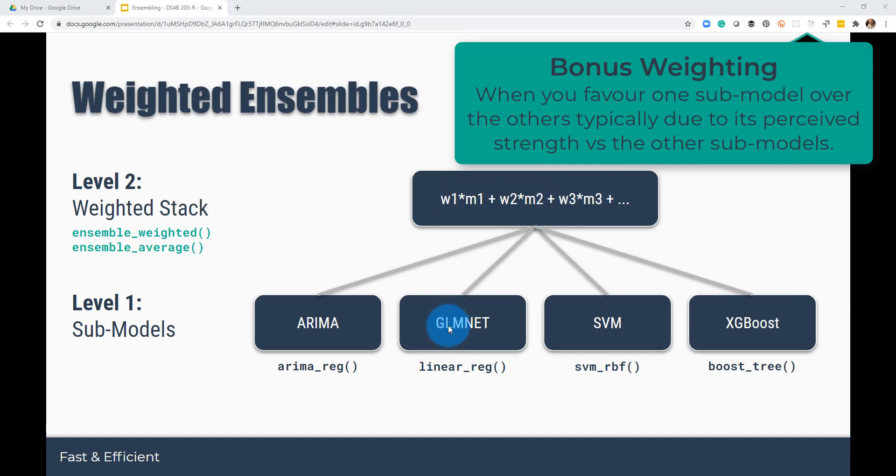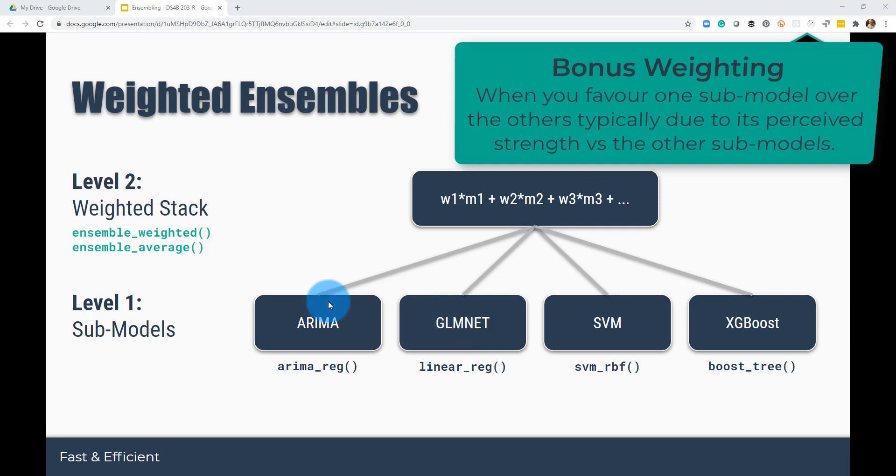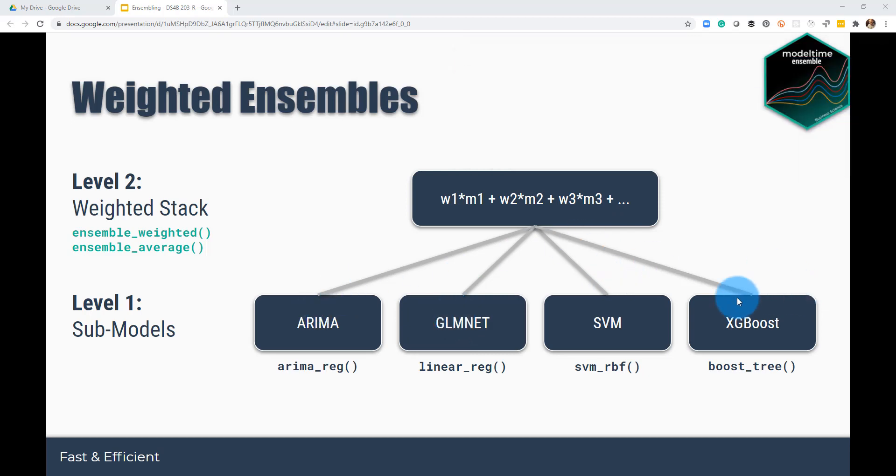So that way your GLMnet model has 75, 80% of the weight, and then some of these other models have much less, and you can distribute them any way you want. And that's part of the challenge with the weighted ensembling is how best to weight them. So these are both really good strategies, and they're fast and efficient, and they're very easy to use and very easy to comprehend.